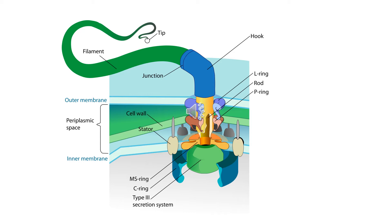In the basal body we can see several rings: L ring, P ring, MS ring, and C ring, with a central rod in the center. The basal body is located in the periplasmic space. This is the structure of the bacterial flagella.